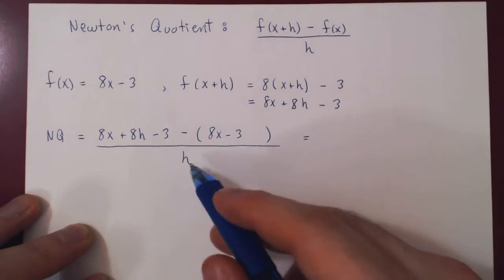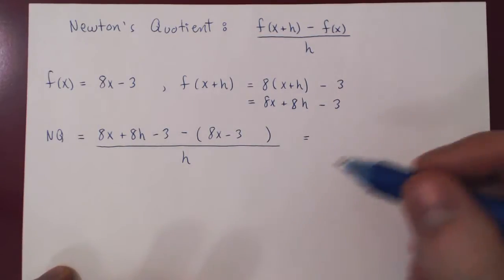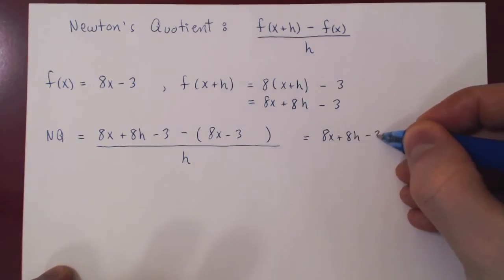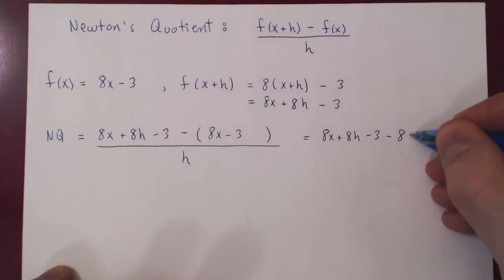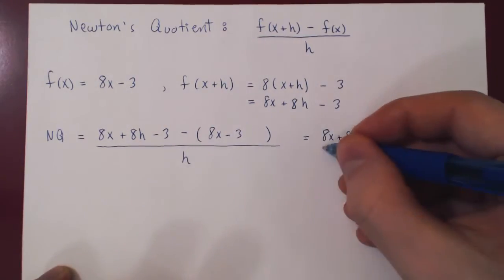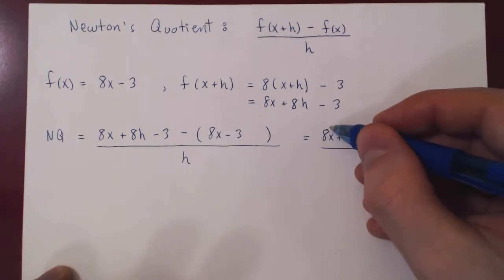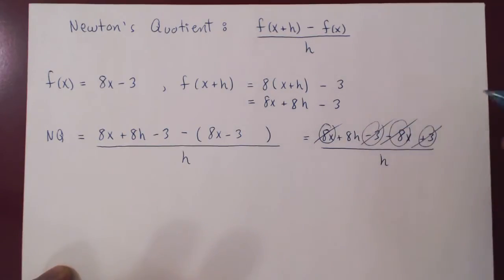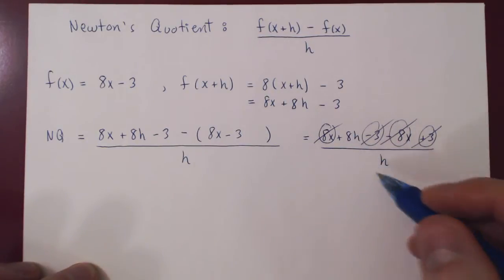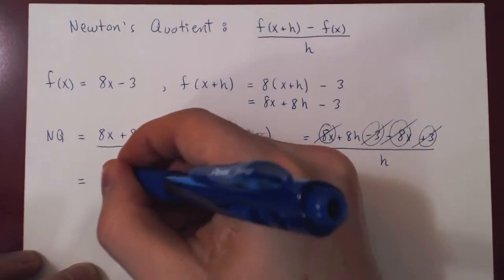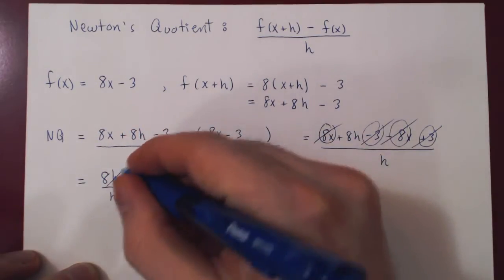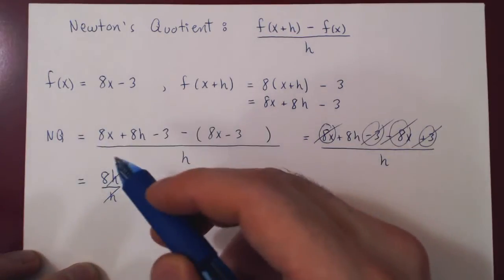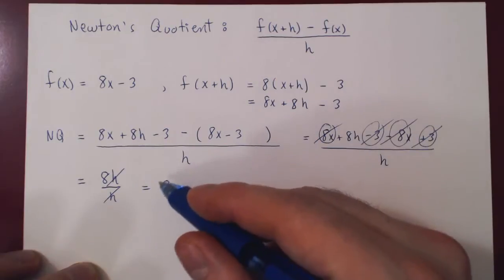Let's simplify the numerator and see if we can cancel the h. We have 8x plus 8h minus 3, minus 8x, and negative negative 3 is positive 3, all over h. 8x minus itself gives 0, negative 3 plus 3 gives 0, and we're left with 8h over h. But h over h cancels to 1, and we're left with 8.